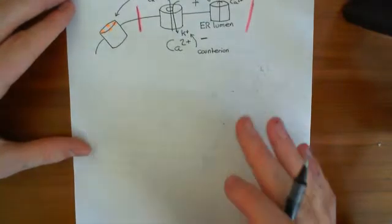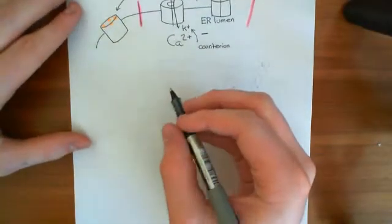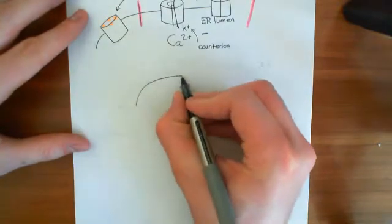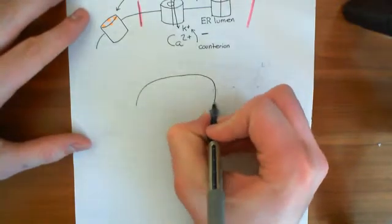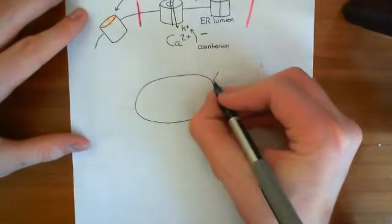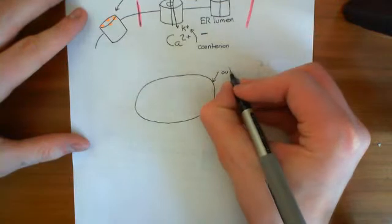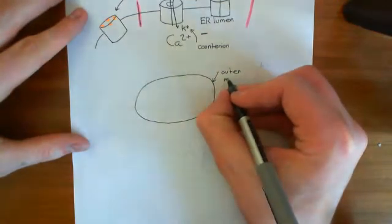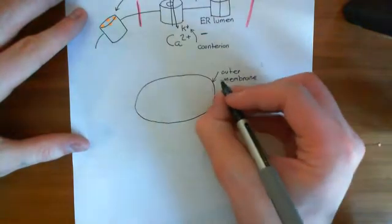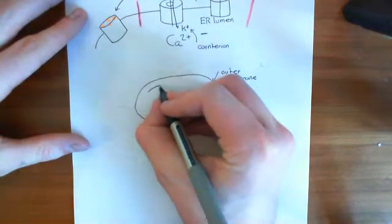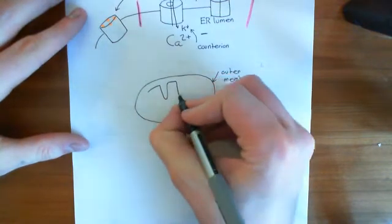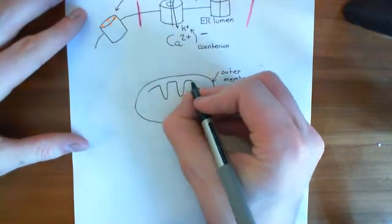So the structure of a mitochondria: a mitochondria has two membranes. It has an outer membrane and then it has an inner membrane. These are two separate phospholipid bilayers. The outer membrane is a phospholipid bilayer. The inner membrane is a phospholipid bilayer.